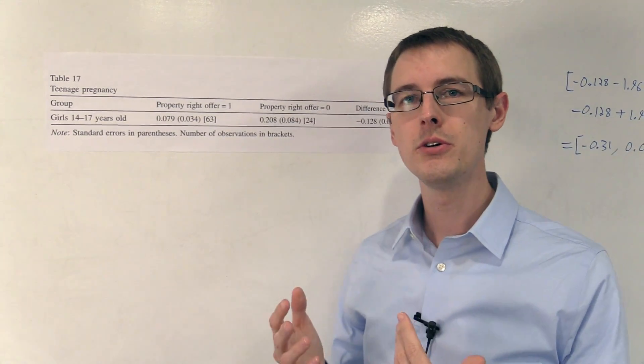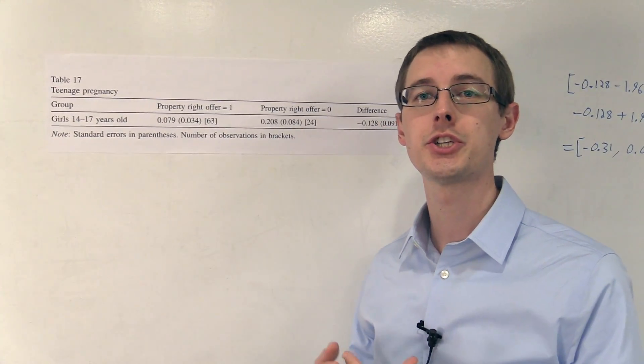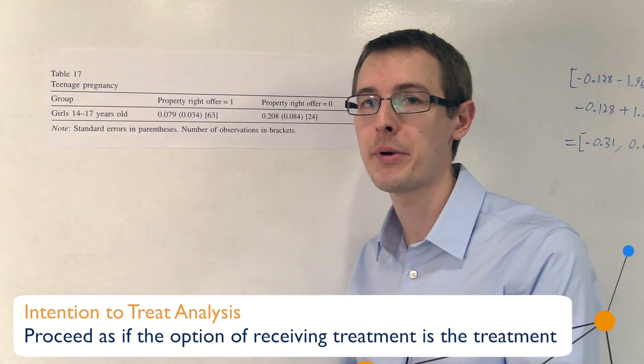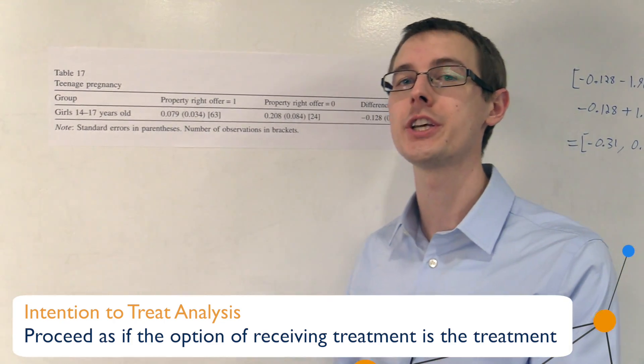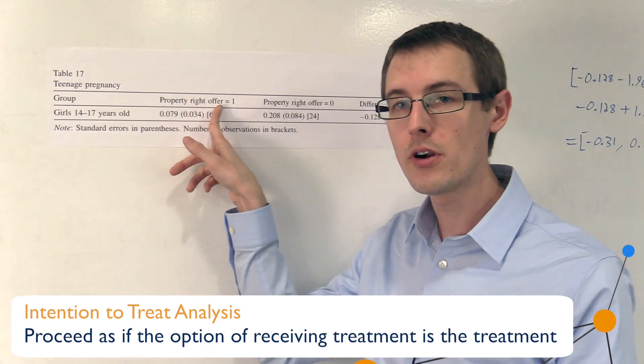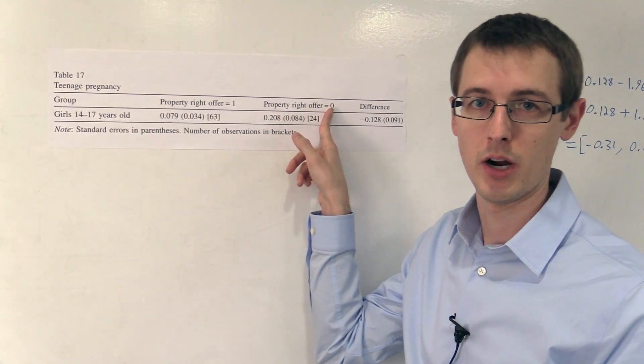So what we're going to do to deal with this problem is do an intention to treat analysis and redefine our treatment variable of interest from being having property rights to being having the option of getting property rights. So we're going to look at having a property right offer versus not having a property right offer.